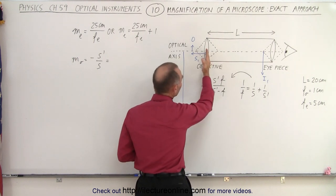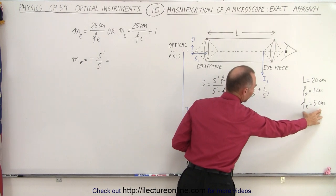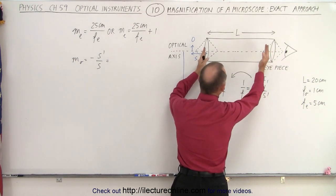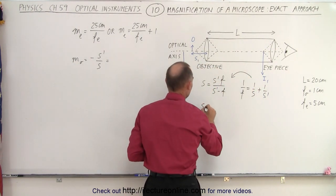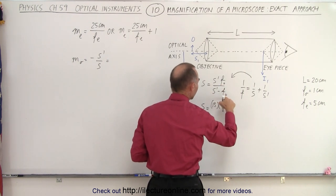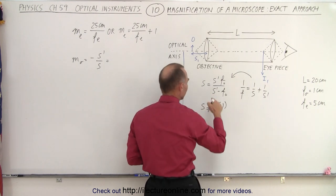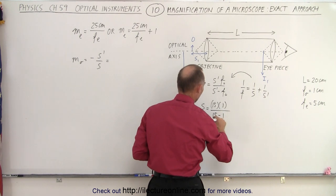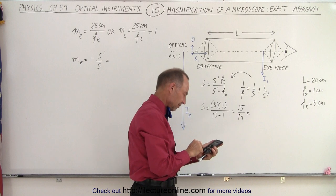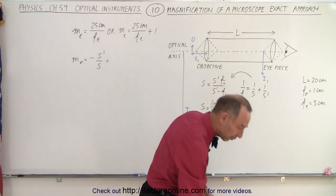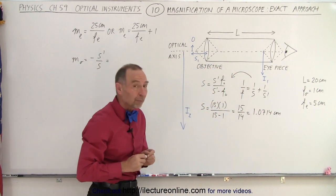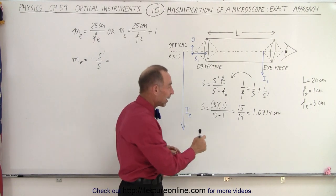The image is going to be placed just inside the focal point of the eyepiece. In our example, the eyepiece has a focal length of 5 centimeters. We take the full length of the microscope and subtract the focal length of the eyepiece, giving us an image distance of 15 centimeters. So the object distance is equal to 15 times 1, divided by 15 minus 1, which is 15 over 14, giving us 1.0714 centimeters.